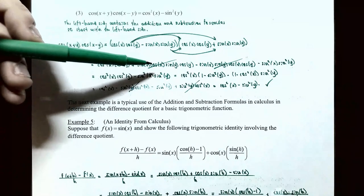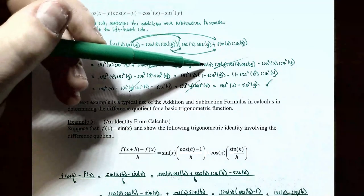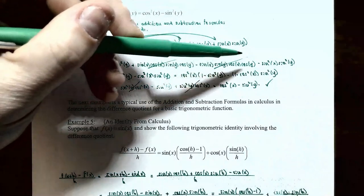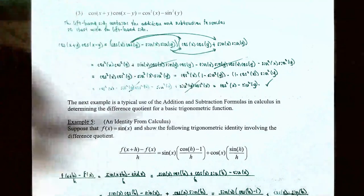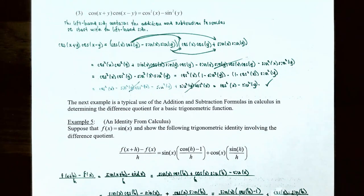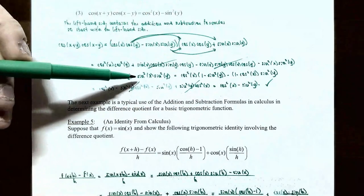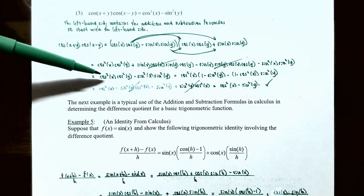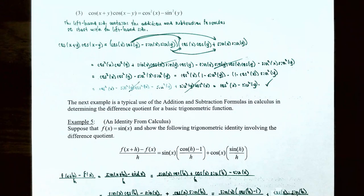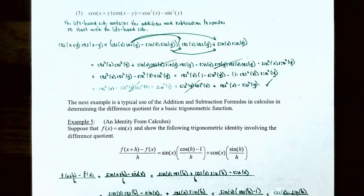After cancellation we only have two terms left: cosine squared of x times cosine squared of y, and subtract sine squared of x times sine squared of y. We're trying to reach cosine squared of x subtract sine squared of y. Since cosine squared of y is not in the right-hand side, we need to replace it. Using the Pythagorean identity, cosine squared of y equals one subtract sine squared of y.